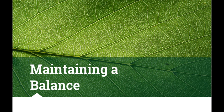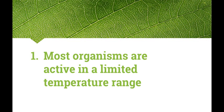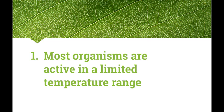They need to be able to carry out a range of different things in order to keep a balance. The unit is broken up into three sections. The first one we are looking at is: most organisms are active in a limited temperature range. For this section we'll be looking at how temperature can affect an organism and the different processes that organisms have in place in order to maintain that temperature within this narrow range.